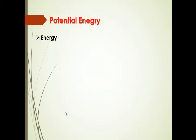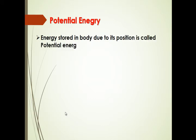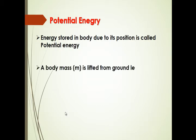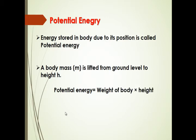First, Potential energy. Energy stored in a body due to its position is called Potential energy. (જે વસ્તુની કાર્યશક્તિ તેના સ્થાનને લીધે હોય તો તેને સ્થિતિજ કાર્યશક્તિ કહે છે.) A body of mass M is lifted from ground level to height H. Potential energy is equal to weight of body into height: PE = MGH. Weight is the force by which a body is attracted toward the center of the earth; mass is the matter contained in a body.